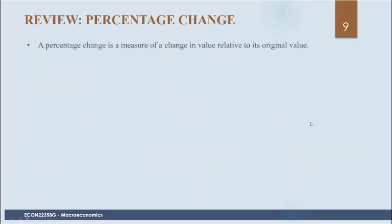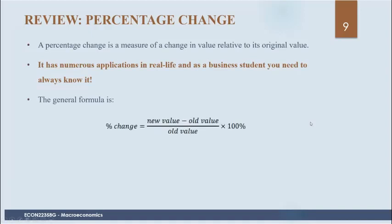So we know what a percentage change is. The formula is simply the new value minus the old value over the old value. For example, if a can of Coke is $3 at the corner store and $2 at the grocery store, and you ask how much more expensive it is at the convenience store, the new number is 3, the old is 2, so you do 3 minus 2 over 2 and multiply by 100. But if you ask how much lower the grocery store price is compared to the convenience store, the new number is 2, you subtract 3, divide by 3, and you get a different percent.